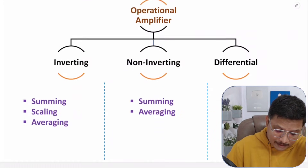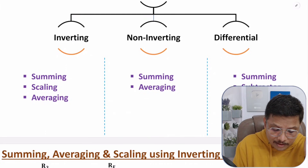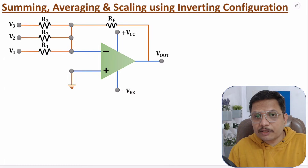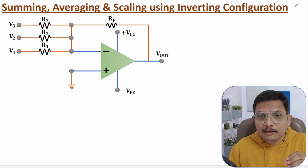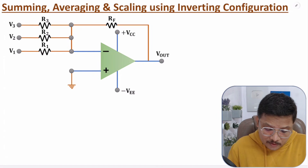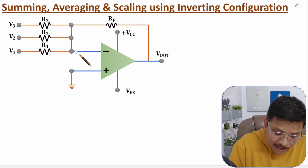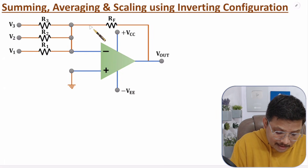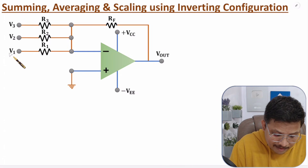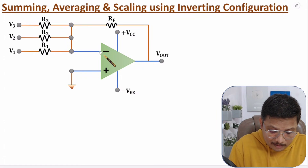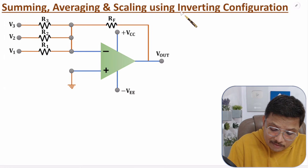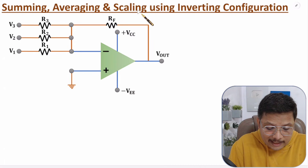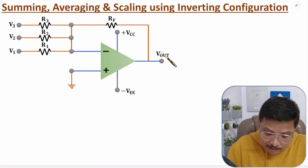Now I'll explain summing, scaling and averaging using inverting configuration with negative feedback. We have negative feedback using resistance RF, and inputs V1, V2 and V3 are given to the negative terminal. To find summing, averaging and scaling, we first need to derive the output equation.